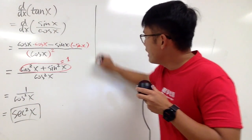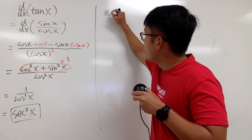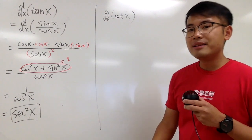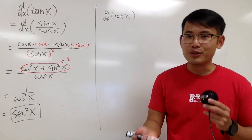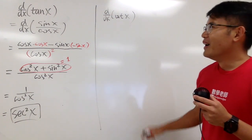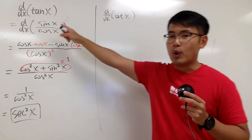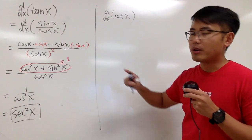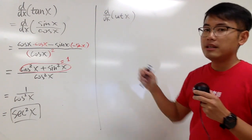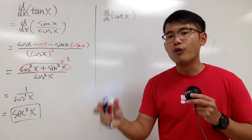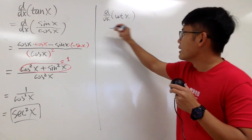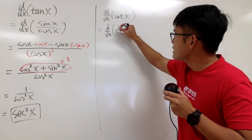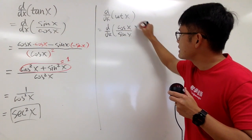On the other hand, let's go ahead and find the derivative of cotangent x. You can still use the definition of derivative, or you can do what we did. We have to remember that cotangent is the same as cosine over sine. So let's differentiate cosine x over sine x.